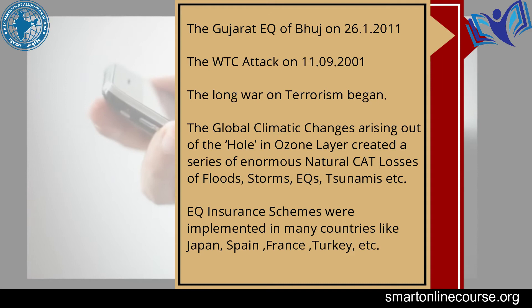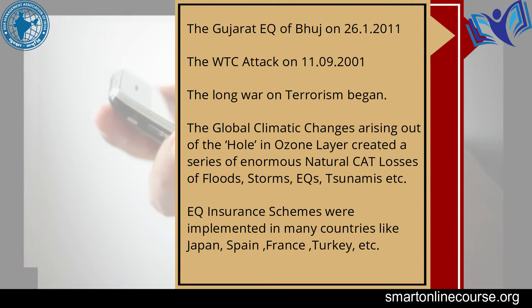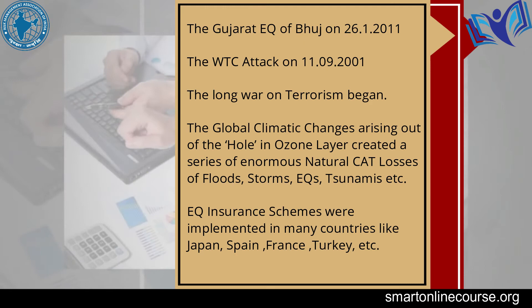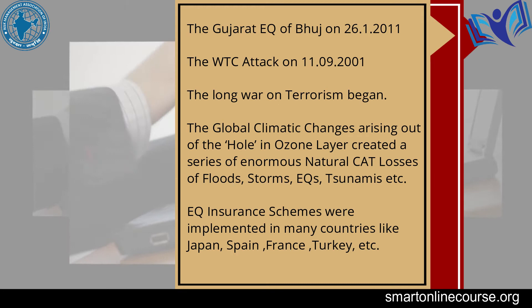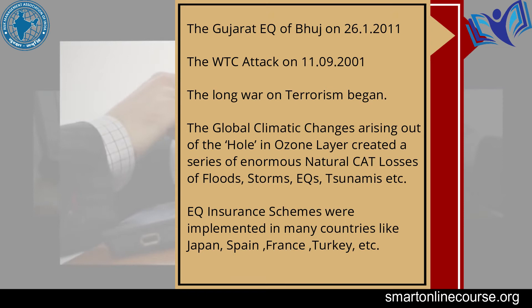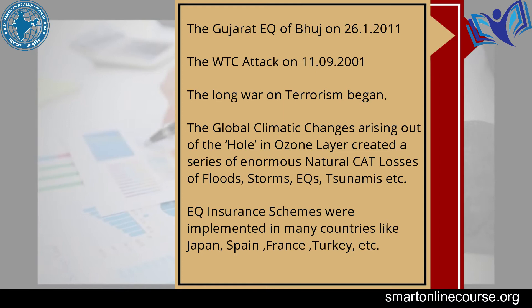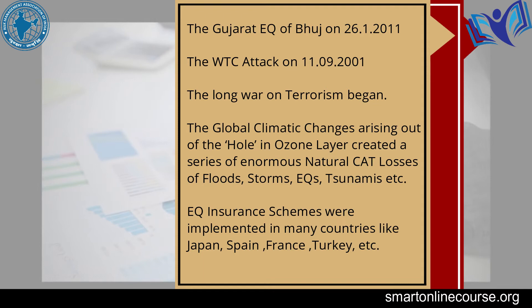Three major incidents then happened: the Gujarat earthquake at Bhuj on 26th January 2001; the WTC attack on 11th September 2001, which began the long war on terrorism; and global climatic changes arising from the depleted ozone layer, creating a series of enormous natural catastrophic losses of floods, storms, earthquakes, and tsunamis. Earthquake insurance schemes were implemented in many countries like Japan, Spain, France, and Turkey.